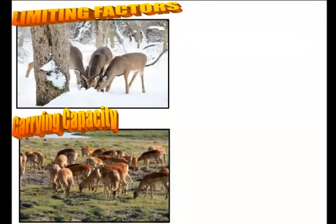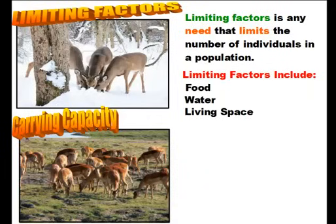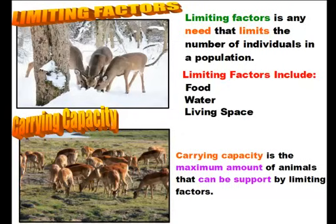There are two terms you should know: limiting factors and carrying capacity. Limiting factors are any needs that limit the number of individuals in a population — including food, water, and living space. The food in an area can only support so many animals; if there's enough food for 10 deer, that food limits the deer population to 10. Carrying capacity is the maximum number of animals that can be supported by limiting factors — in that case, 10 deer.